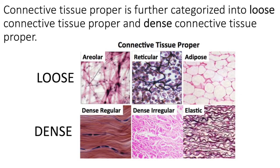Connective tissue proper is further categorized into two subcategories: loose and dense. Areolar, reticular, and adipose connective tissues are loose connective tissue proper. Dense regular, dense irregular, and elastic connective tissues are dense connective tissue proper.